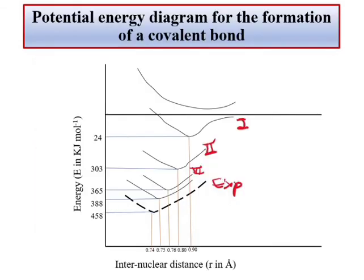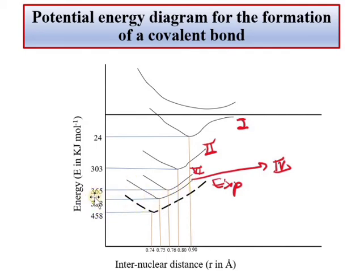अब फिर से potential energy diagram देखते हैं। Situation 4 — ionic character of covalent bond — की वजह से psi change हुई। उस psi से energy calculate की गई तो 388 kJ/mol आई और bond distance 0.75 आई, जो 0.74 के बहुत नजदीक है। इसके बाद Heitler and London ने बताया कि इन concepts को add करते हुए covalent bond का formation explain किया जा सकता है।